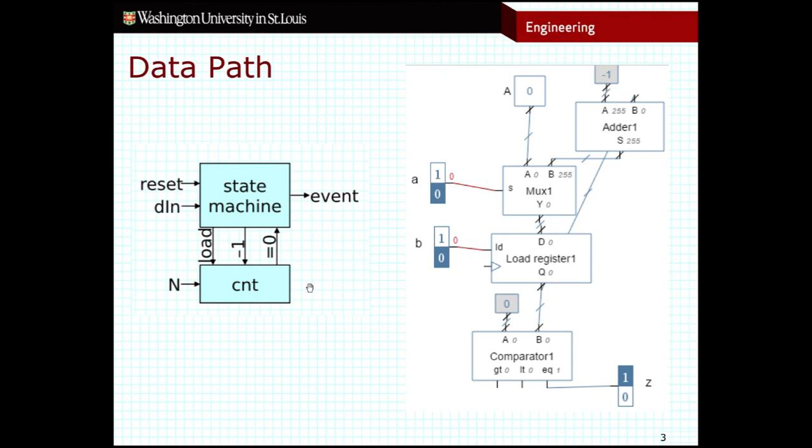This reinforces this idea that when we create high-level state machines, we've got two pieces. We've got a data path, which is what we're looking at now, and then the state machine itself, which we call a controller. We're going to spend some more time talking about this distinction of controllers and data paths in the upcoming sections.